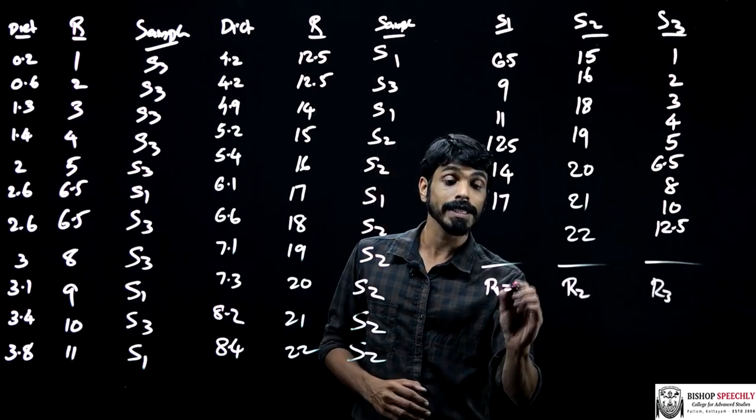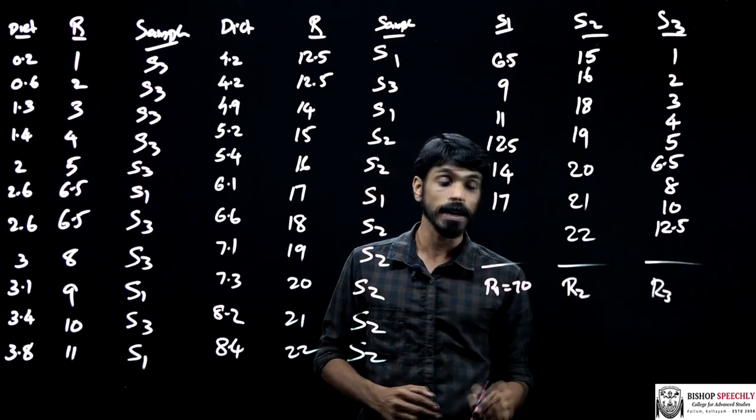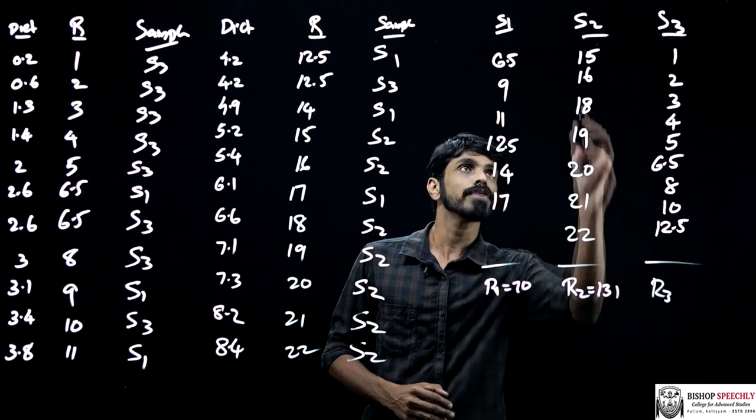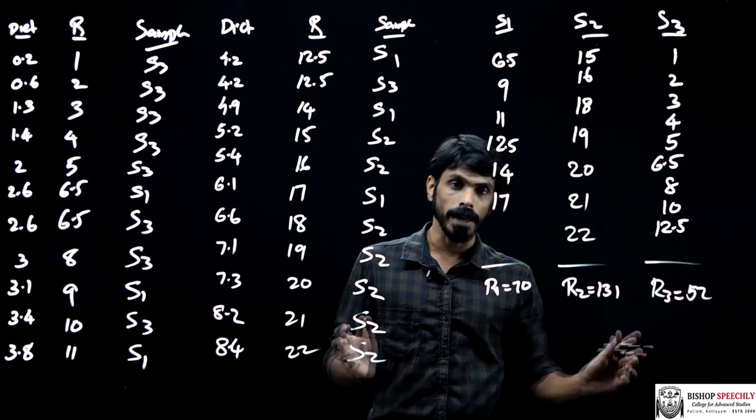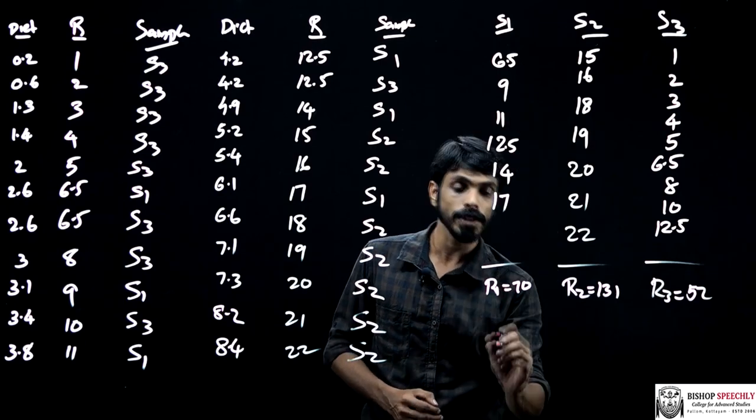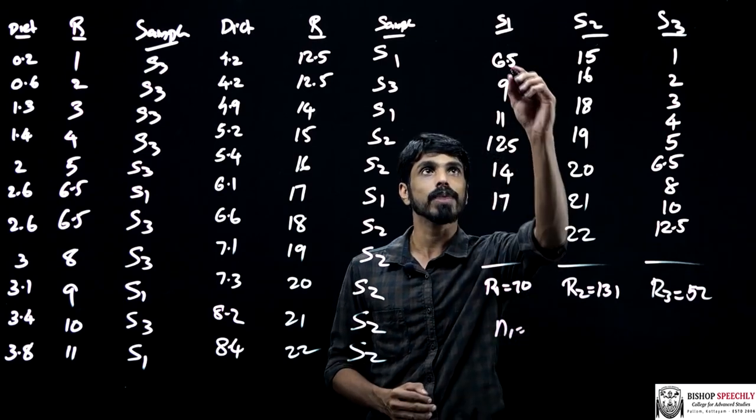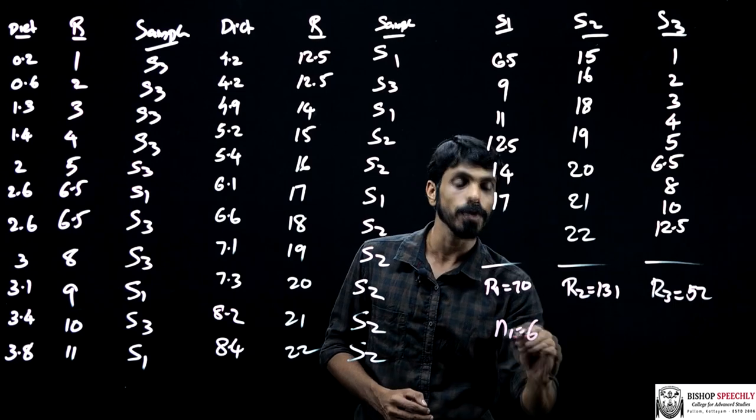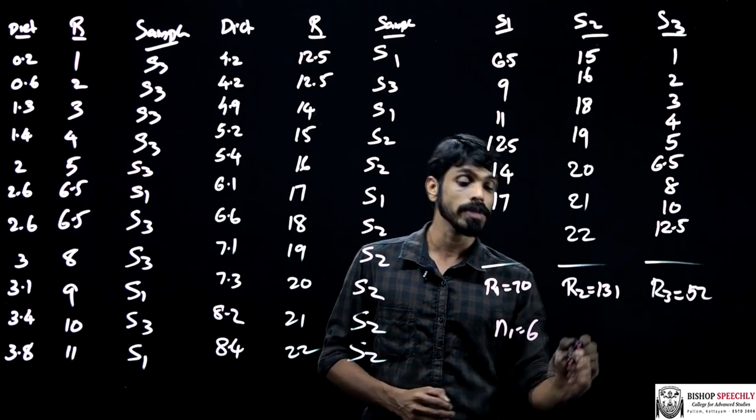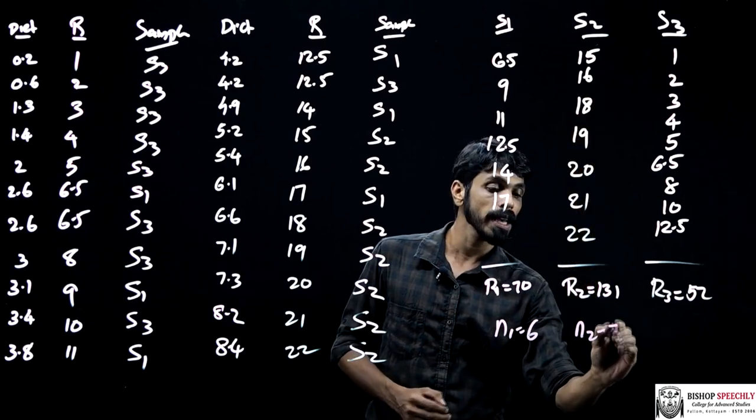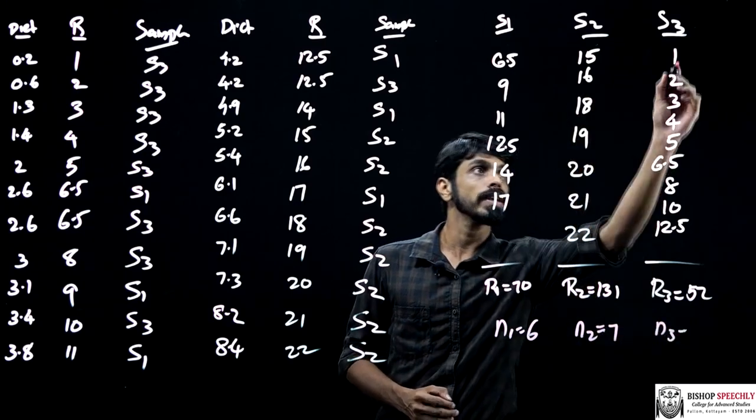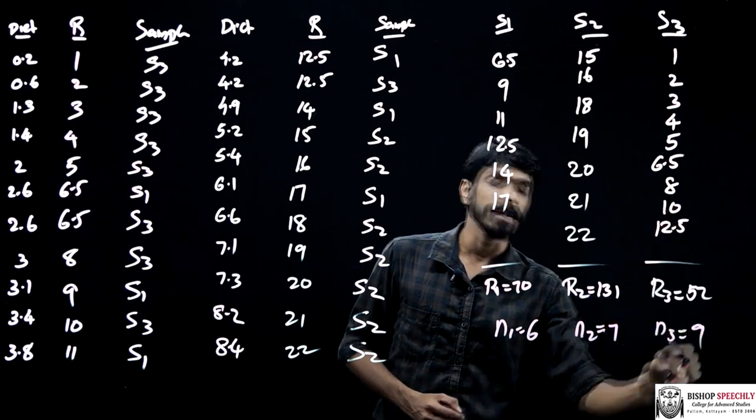The total for S1 is 70, that is known as R1. For S2, it's 131, that is R2. And for S3, it's 52, that is R3. The total number of observations: N1 equals 6, N2 equals 7, and N3 equals 9.